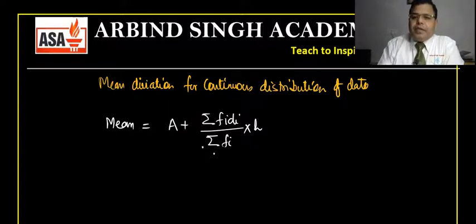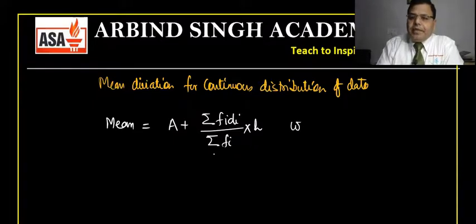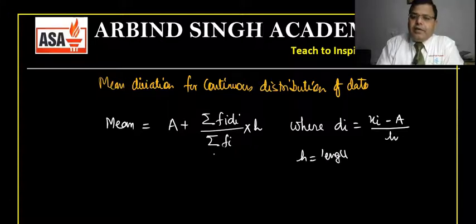In this formula, di is defined as di = (xi − a) / h, where h is the length of the class interval.